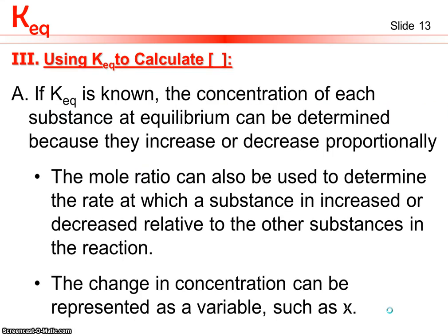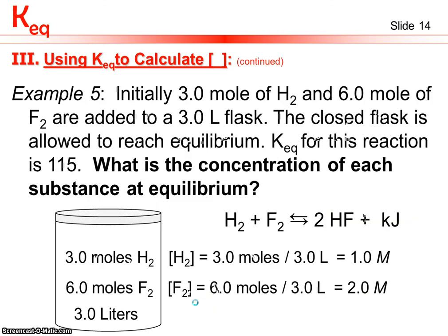The difficult part of using KEQ is working backwards — given KEQ, can we calculate the amounts of substances at equilibrium? We use the mole ratio, since the rate of increase or decrease of each substance depends on its coefficient. Using a variable x for the unknown change: starting with 3 moles of H2 and 6 moles of F2 in a 3-liter flask, initial concentrations are H2 = 1 M, F2 = 2 M, and HF = 0 M.